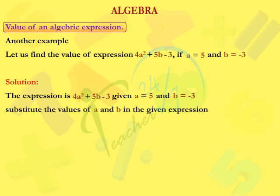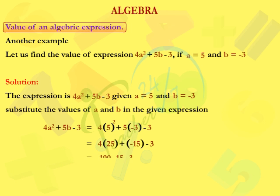Substitute the values of a and b in the given expression. 4a square plus 5b minus 3 is equal to 4 into 5 square plus 5 into minus 3 minus 3, which is equal to 4 into 25 plus minus 15 minus 3, which is equal to 100 minus 15 minus 3, which is equal to 82.